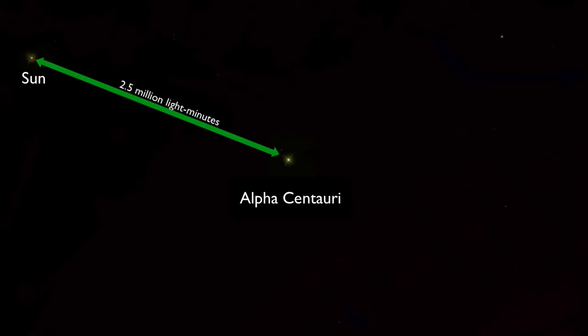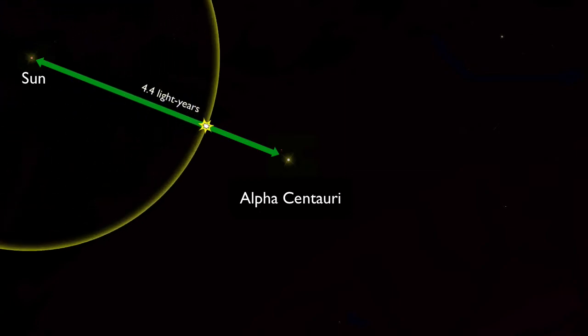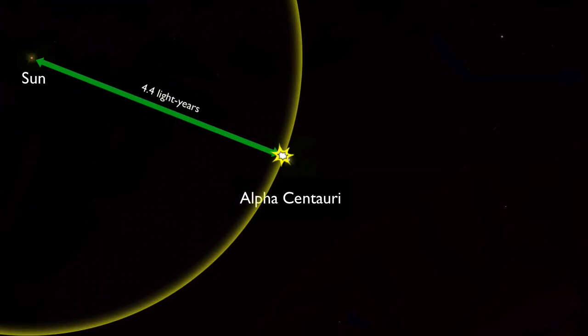The distance to the Alpha Centauri system in light years? That's about 4.4. It takes light from our Sun about 4.4 years to reach Alpha Centauri.